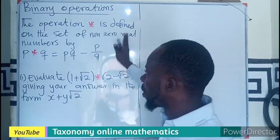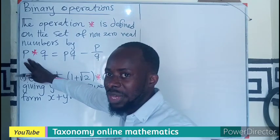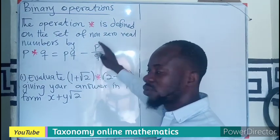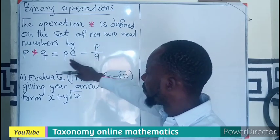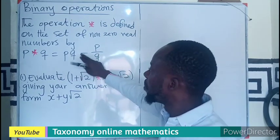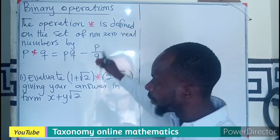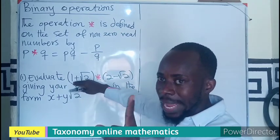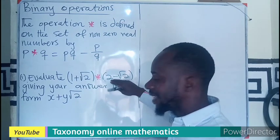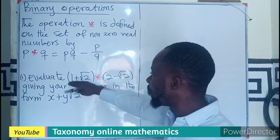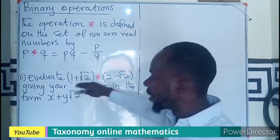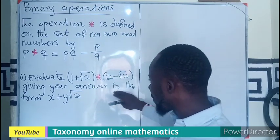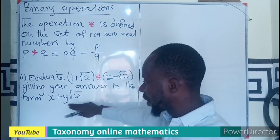The operation star is defined on a set of non-real numbers as p★q = pq minus p over q, meaning the first term times the second term minus the first term over the second term. As we evaluate this, one set is taken as the first term and the second set is taken as another term — this whole expression is your p and this whole expression is your q.